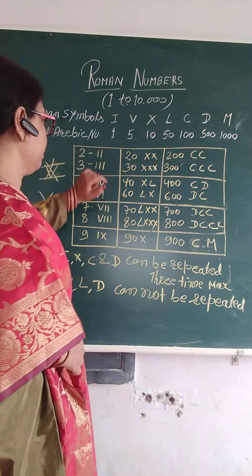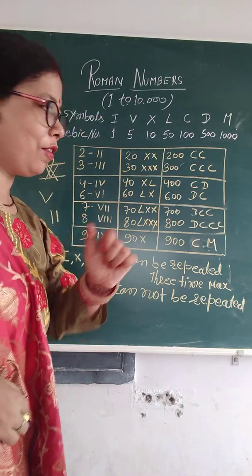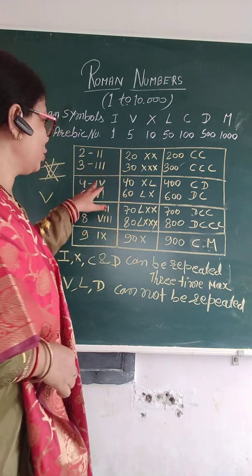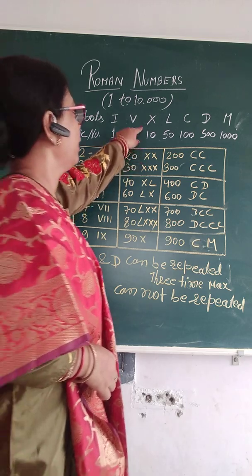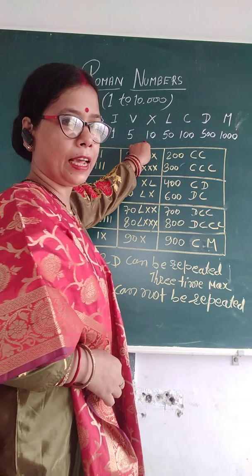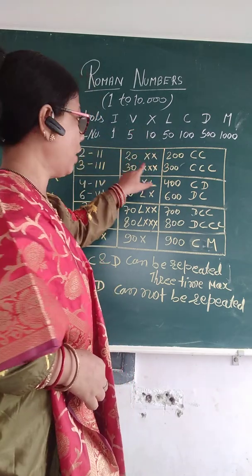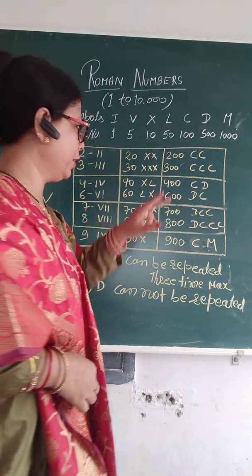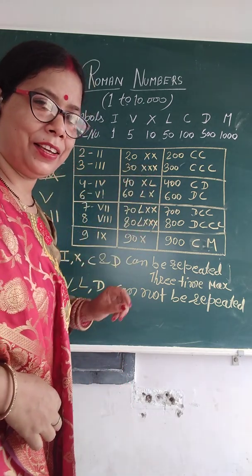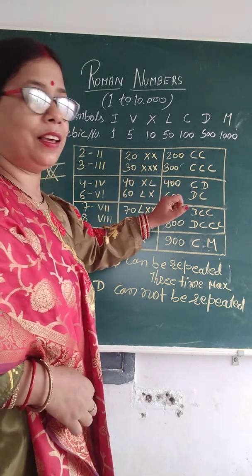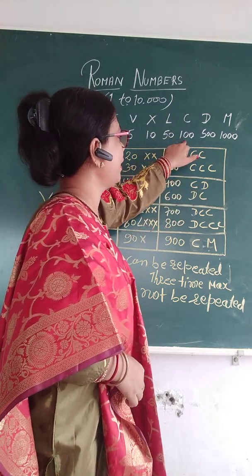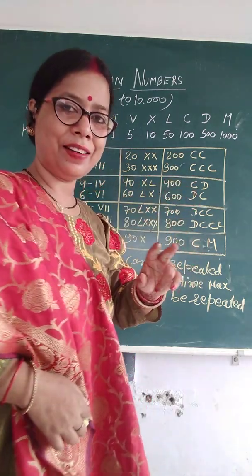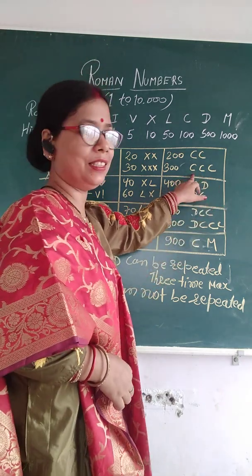One is indicated by I, so 2 times I gives 2 — II. For 3, three I's — III. X for 10, 20 means 10 plus 10, so XX. 30 is 3 times 10, so XXX. C for 100, 2 times 100 is CC for 200. 3 times 100 is CCC for 300.